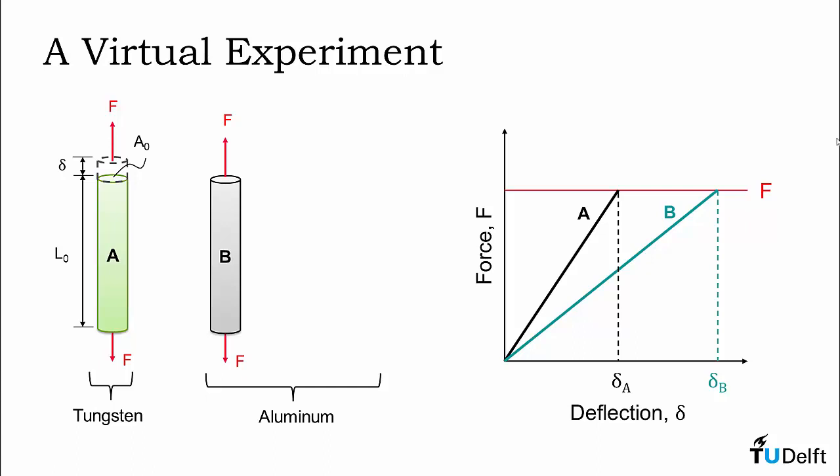However, if we change the geometry of the rod, and again use the same soft aluminum material with a shorter length and larger cross-sectional area, we also intuitively know that we will get a smaller deflection.